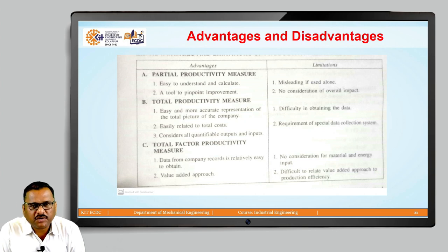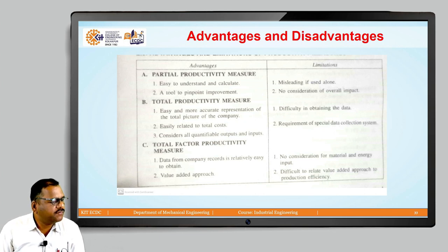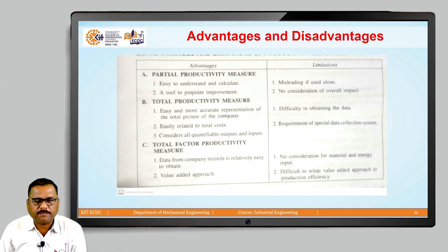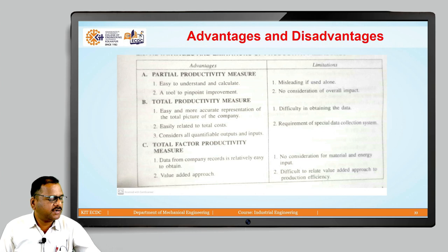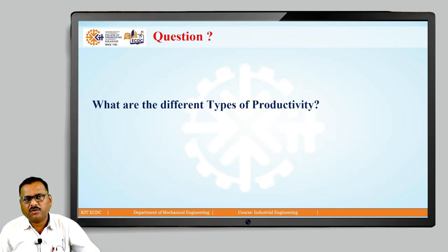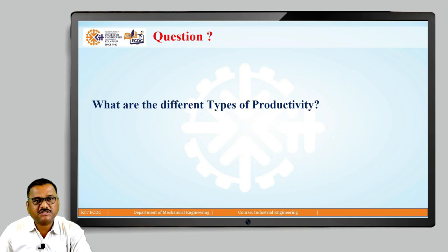The disadvantage for total factor productivity is no consideration for materials and energy input. The second limitation is it is difficult to relate the value added approach to production efficiency. Friends, these are the advantages and disadvantages from the different types of productivities. Based on this knowledge, the question for you is: what are the different types of productivity? Just think over it.